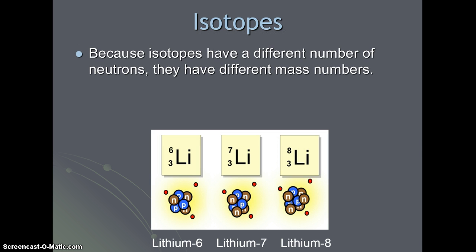Because isotopes have a different number of neutrons, they also have different mass numbers. So if we look at these three different lithium atoms, they each have three protons. But you can see there's a lithium-6, which has three neutrons, a lithium-7 with four neutrons, and a lithium-8, which contains five neutrons.